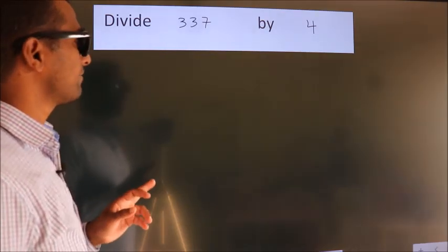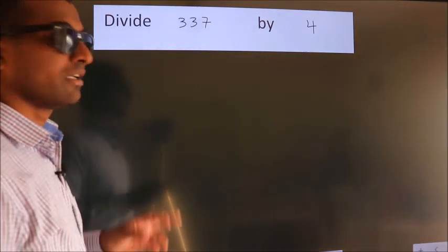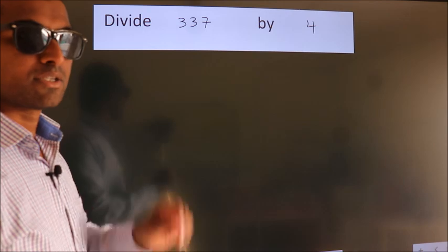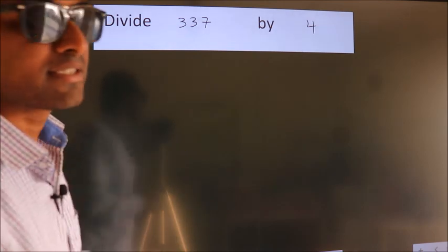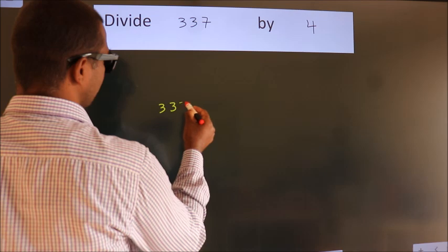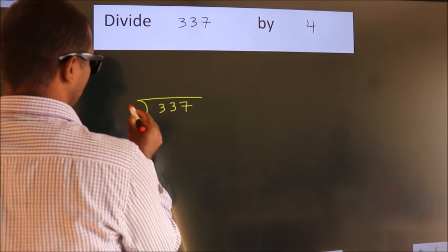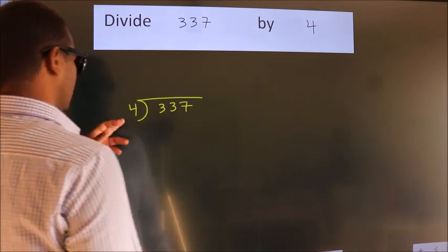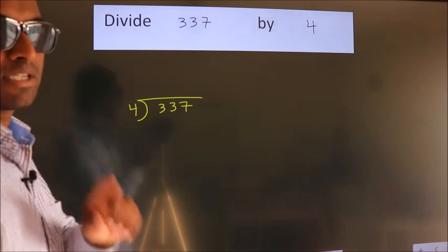Divide 337 by 4. To do this division, we should frame it in this way. 337 here, 4 here. This is your step 1.